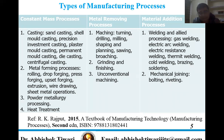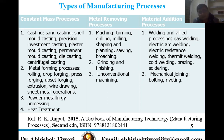Types of manufacturing processes can be based on constant mass processes, metal removing processes, or material addition processes. For constant mass processes, examples include casting, metal forming processes, powder metal processing, and heat treatment. In casting there are various types such as sand casting, shell mold casting, precision investment casting, plaster mold casting, die casting, and centrifugal casting.